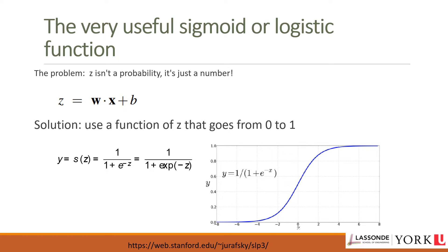The sigmoid function has the equation: y = 1 / (1 + e^(−z)). It has several advantages: it maps any real-valued number into the range [0, 1]; it is nearly linear around zero but flattens toward the ends, squashing extreme values toward 0 or 1; and it is differentiable, which is useful for learning.